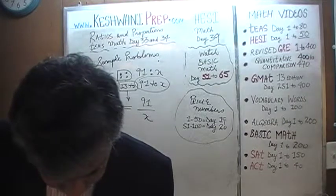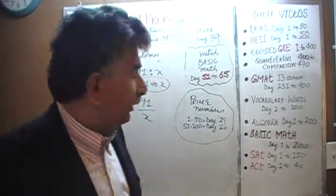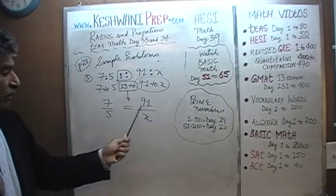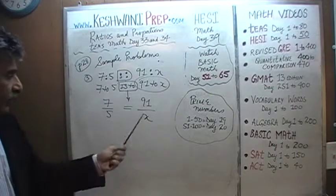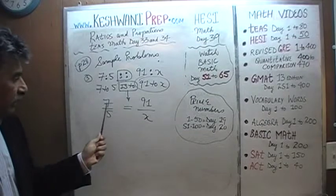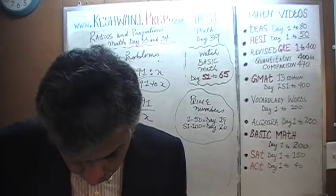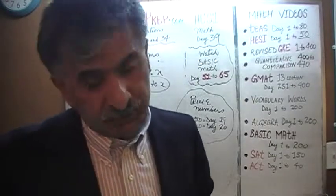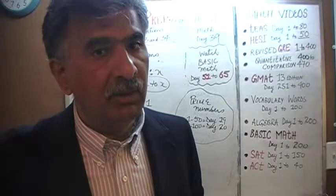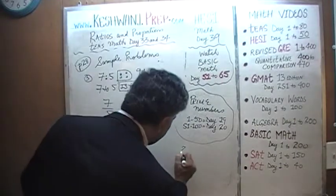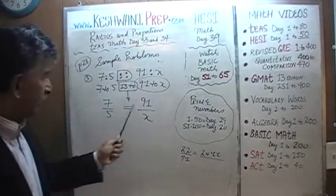The quickest way is to ask: how can I make the top number on this side the same as the top number on the other side? On the other side we have 91, here we have 7. Is 91 a multiple of 7? It turns out 91 is not a prime number — I made a mistake in question number 1. I made a claim that 91 is a prime number and it is not.